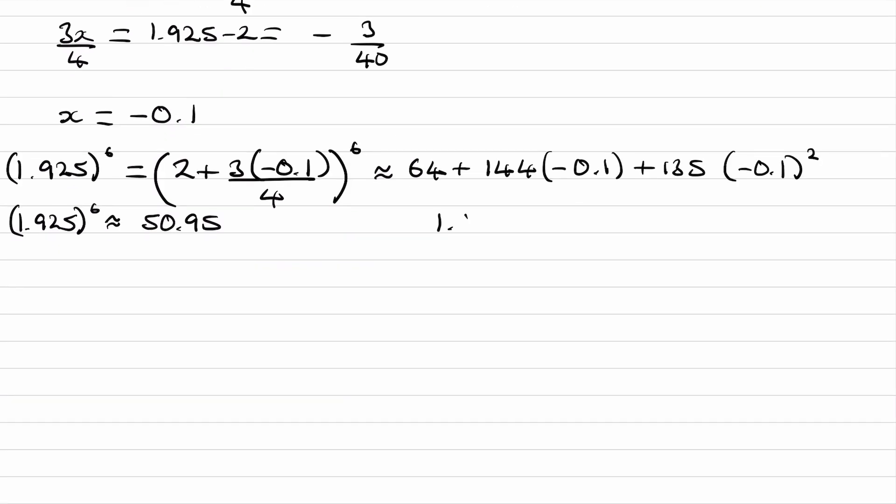And actually, if you were to work this out, like type in this into your calculator, 1.925 to the power of 6, you end up with 50.88437, and this carries on. Notice how these two things are fairly similar. Our approximation using this binomial expansion for 1.925 to the power of 6 is pretty close to the actual answer.